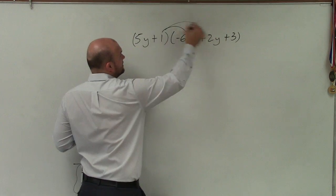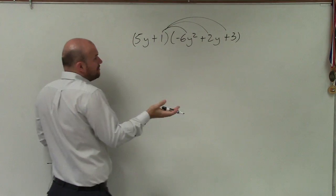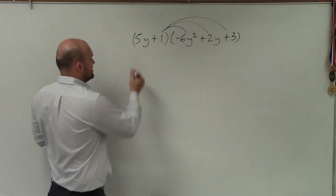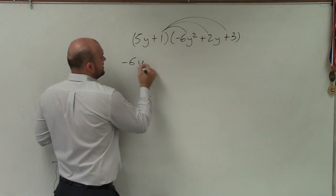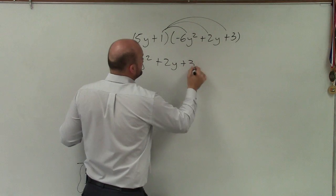Meaning I need to multiply 1 times each one of these terms. Well, when I'm multiplying 1 times each one of these terms, that's going to be pretty simple. That's just going to be the basic negative 6y squared plus 2y plus 3.